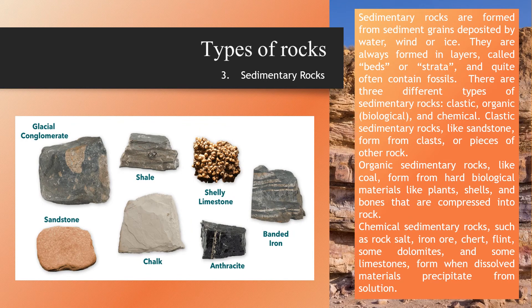The last but not least: sedimentary rocks. Sedimentary rocks are formed from sediment grains deposited by water, wind, or ice. They are always formed in layers, called beds or strata, and quite often contain fossils. There are three different types of sedimentary rocks: clastic, organic or biological, and chemical.